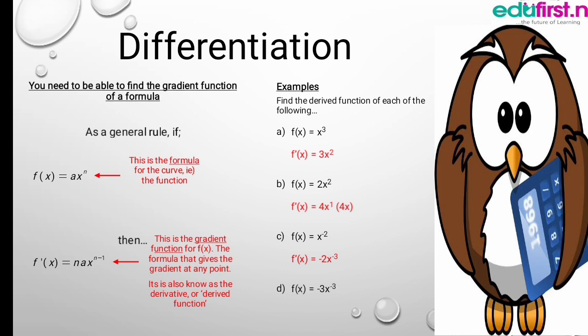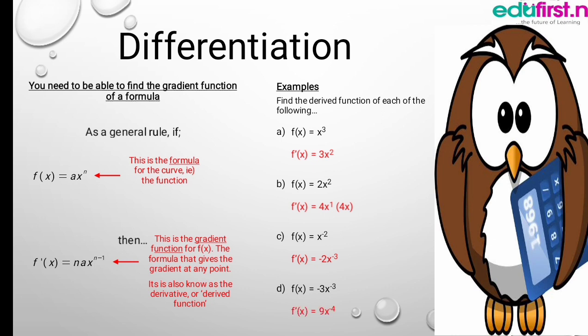Again, f(x) equals minus 3x to the power minus 3, and we also have it to be 9x to the power 4.